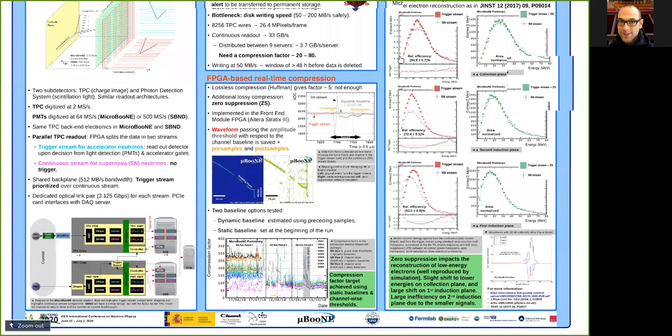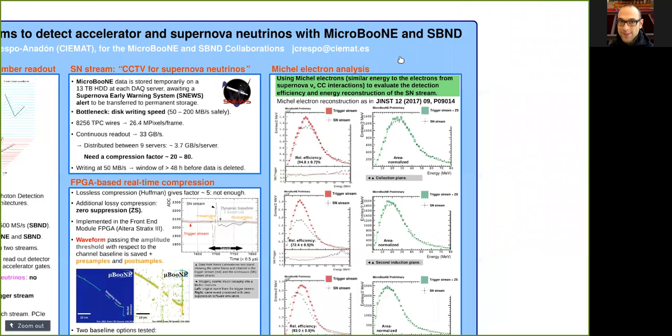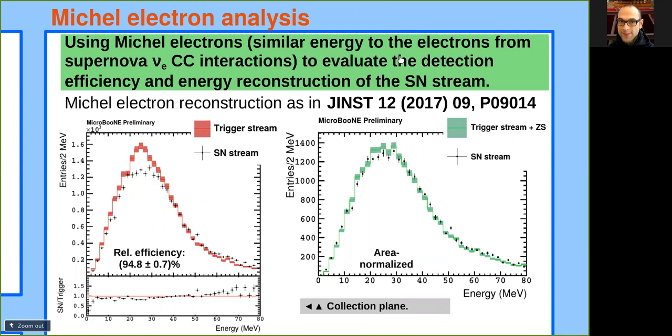To evaluate the detection efficiency and energy reconstruction of the supernova stream, we use Michel electrons, as they span similar energy range as the supernova neutrinos. The red histogram shows the Michel electron spectrum from the trigger stream on the collection plane, and the black points show the spectrum from the supernova stream.